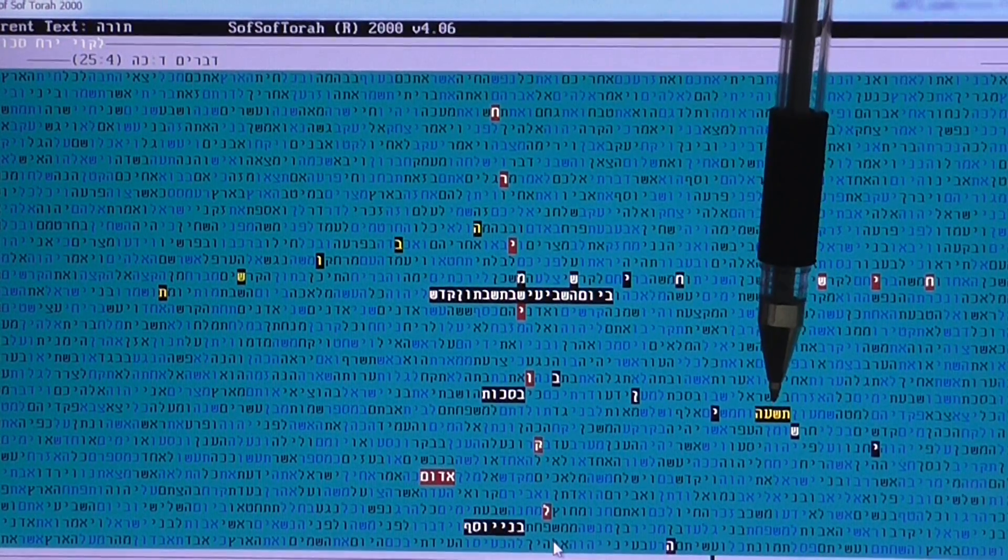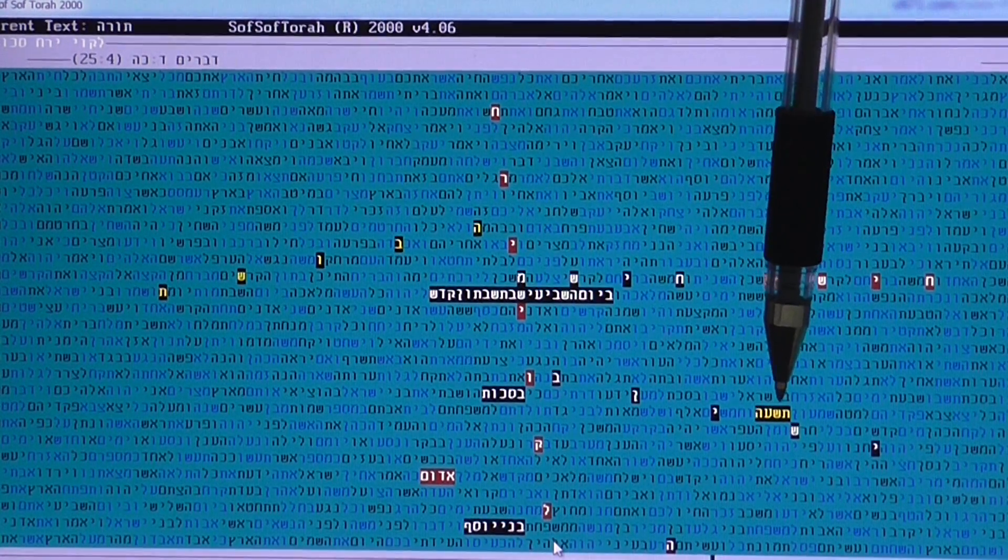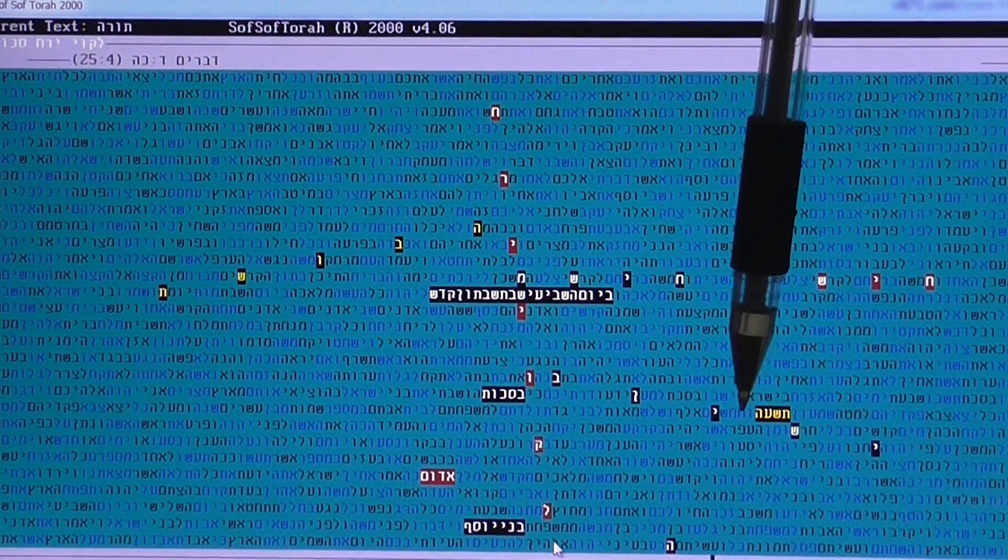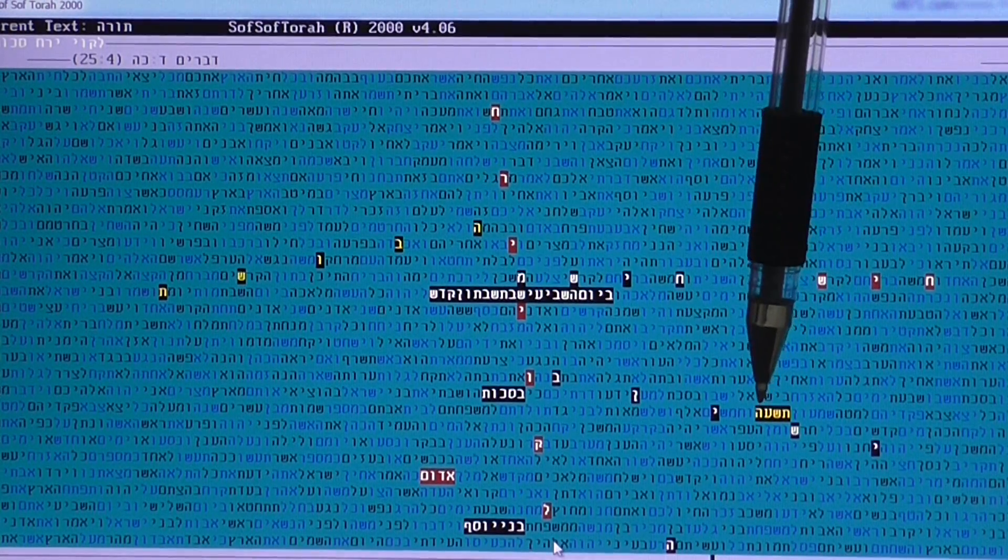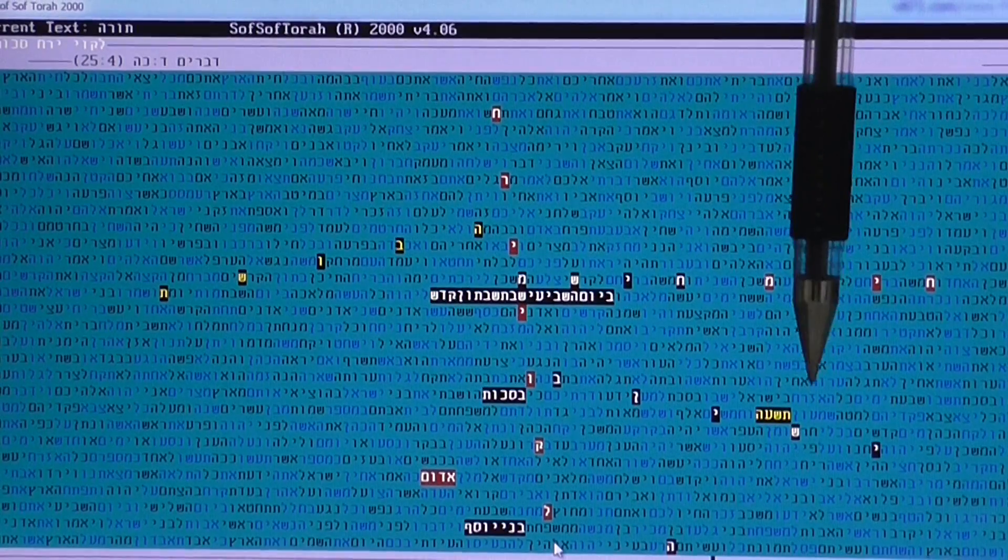Here you have, letter after letter, this coming year. This year that we are now, Tav Shin Ayin Hei, which is 775, which is a year very suitable, appropriate for Mashiach, as we saw.